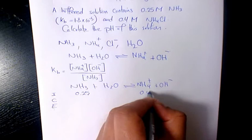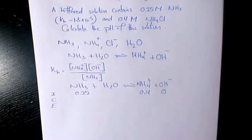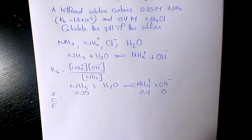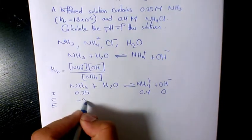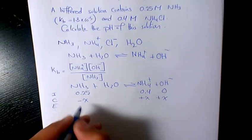OH is going to be approximately zero because water is going to produce 10 to the power of negative 7 of hydroxide. Change: this one is going to be negative X because that's reducing, and here we have plus X plus X.